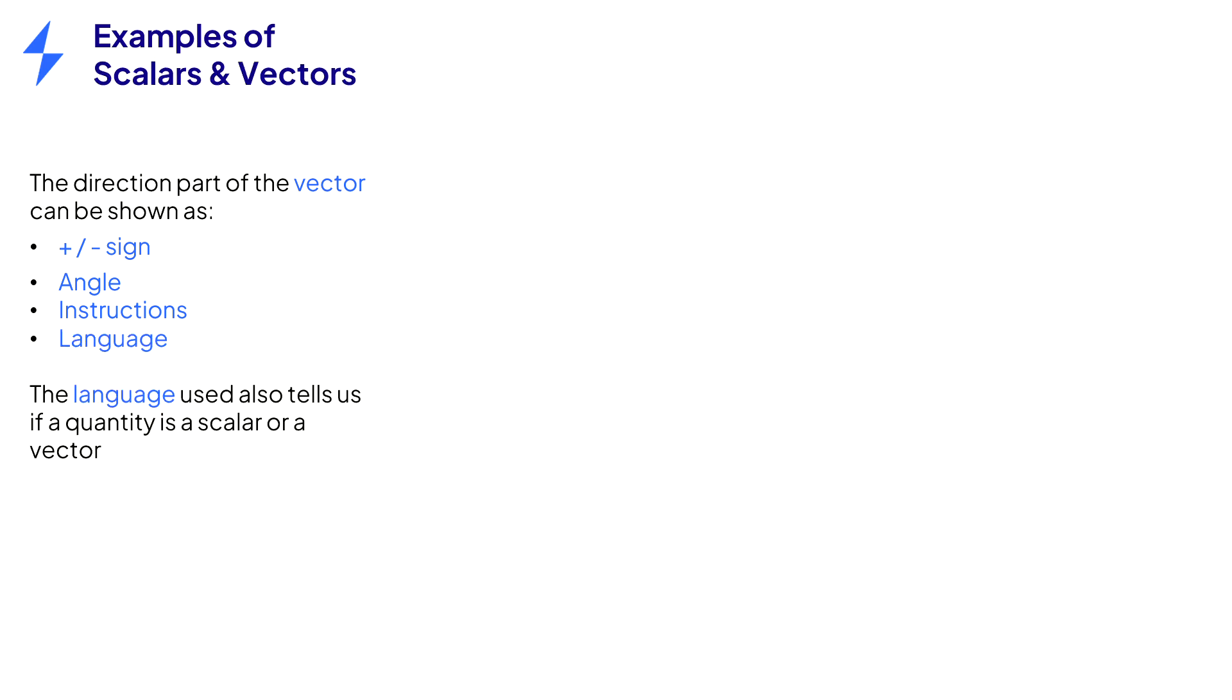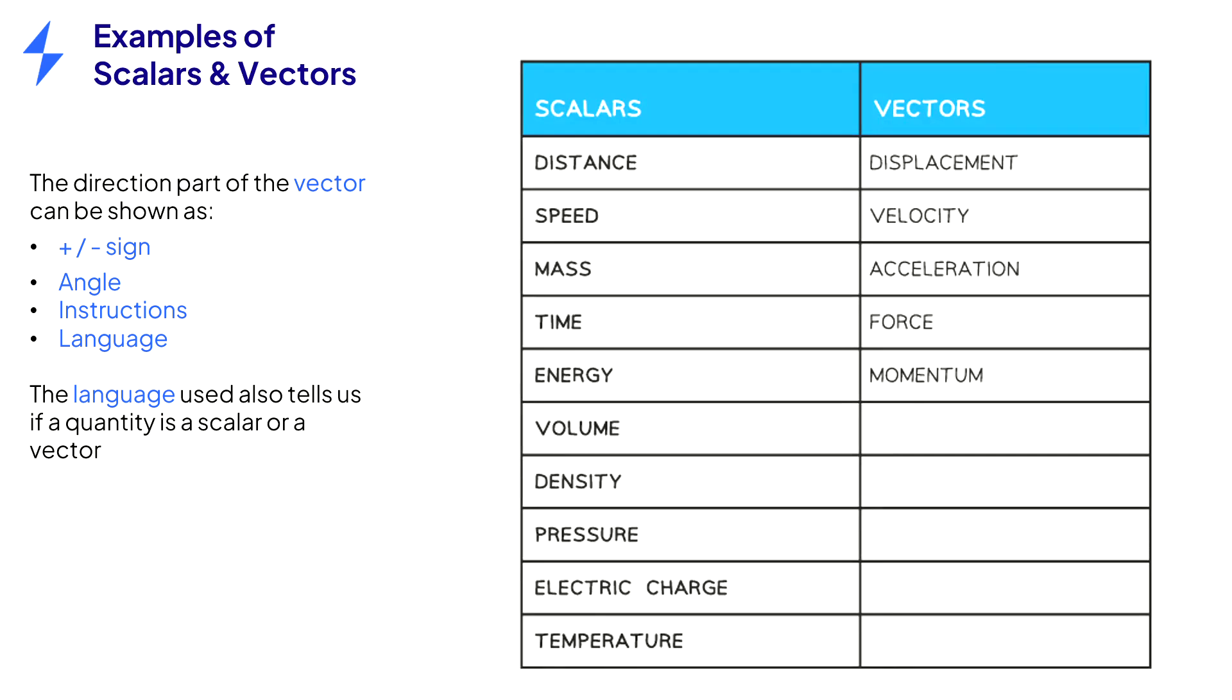Most often, the language used to describe a quantity can tell us whether it is a scalar or a vector. Examples include displacement, distance in a certain direction, and velocity, the speed in a certain direction.